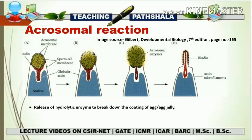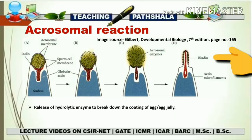With the help of actin molecules already present in the acrosome, the bindin protein is exposed or protruded from the acrosome — this is known as the acrosomal process. The bindin protein then interacts with the EBR1 receptor on the vitelline membrane of the egg, after which the overall fertilization takes place.